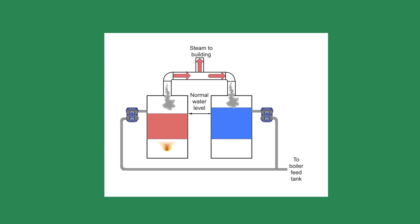They are installed about an inch or two above the normal water line. If the water level reaches this elevation, the traps open and drain water from the boiler to maintain the proper water level. The trap discharge is piped to a condensate or boiler feed tank to reuse the water.